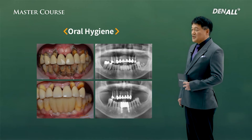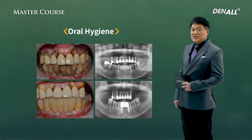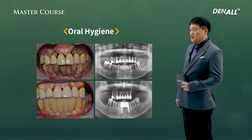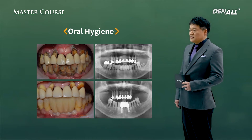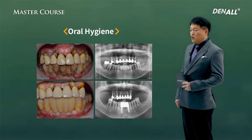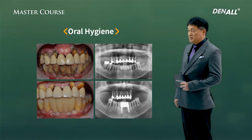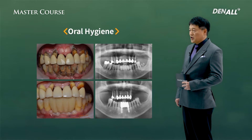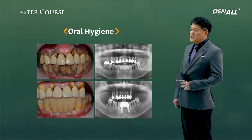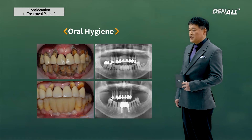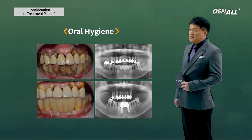Oral hygiene: even for a patient who already has a treatment plan, if the oral condition continues to be this bad, it is necessary to treat first, educate the patient on the importance of oral hygiene, and then do the implant treatment. If oral hygiene continues to be bad, there is a high possibility of peri-implantitis. We need to bear this in mind.